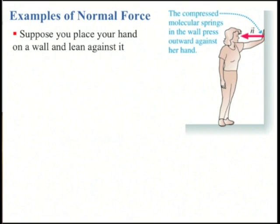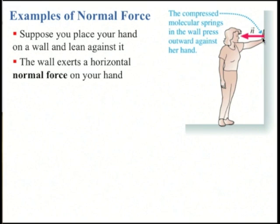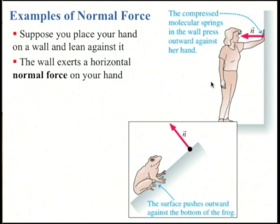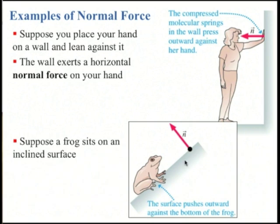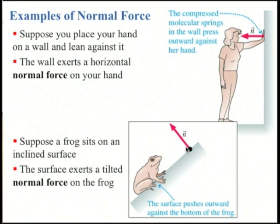Normal force doesn't have to be up. If the surface is vertical, like a wall, and you place your hand against the wall, then the normal force will be horizontal — here it's pressing towards the left. If the surface is tilted, here's a frog sitting on an incline, then the normal force is again perpendicular to the surface — so here it's up and to the left.